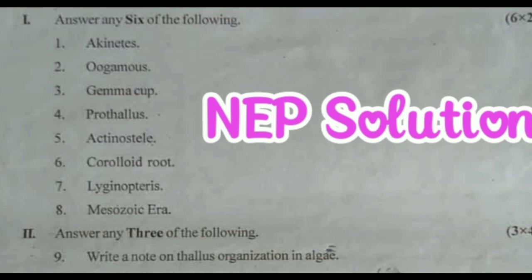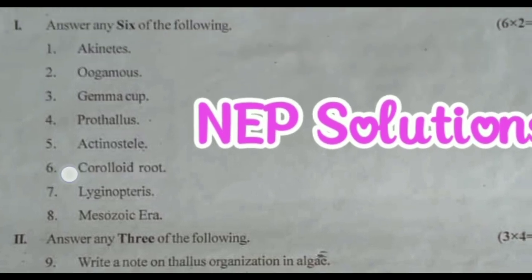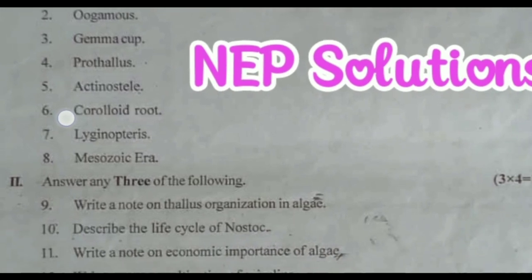Fifth one Actinostele, sixth one Coralloid root, seventh one Lyginopteris, and eighth one Mesozoic Era. You have to write the answer or you have to define these wordings.